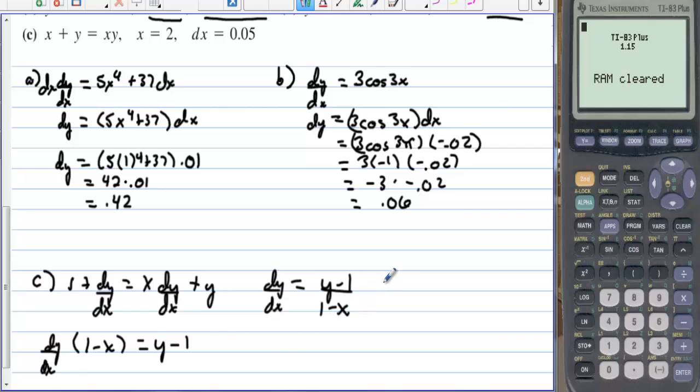And we will evaluate this at the point 2 comma something, but we need that something. So let's plug the 2 in for x. We have 2 plus y equals 2y. That means y is also equal to 2, because we minus the y over, we get y equals 2.